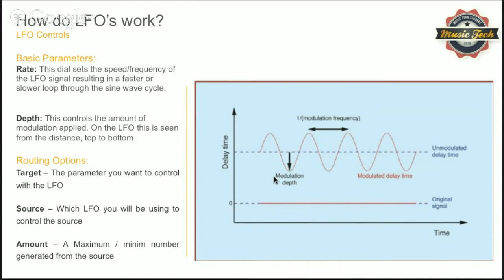So you might say you want the target to be your cutoff. The reason you have a source is because most synthesizers have multiple LFOs, so you have to specify which LFO is going to control that target. Then finally, most routing systems also have an amount setting. If the cutoff is set in the middle, you set the amount to either minus or plus numbers, which allows you to attenuate the cutoff higher or lower by a certain amount. This gives you a consistent, continuous automation effect based on the LFO signal.